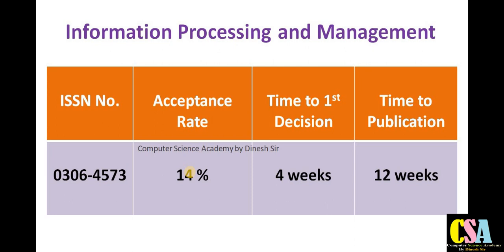The next journal category is Information Processing and Management, covering management, information processing, and computer management. Researchers having titles and aim and scope matching this category should explore this rapid publication journal. Publication comes within 16 weeks — near about three months from submission to publication. You will get notification within four weeks and time to publication is 12 weeks. The acceptance rate is 14 percent.